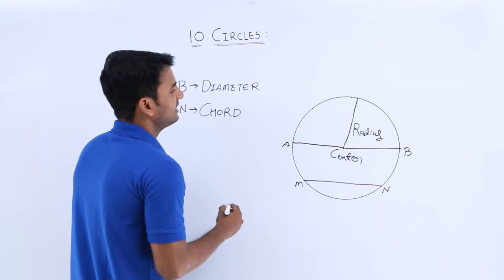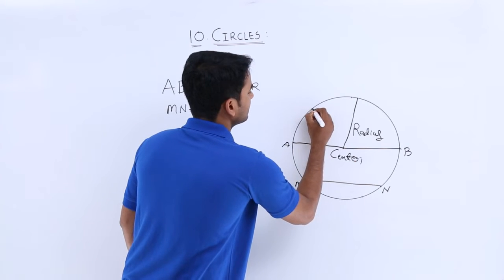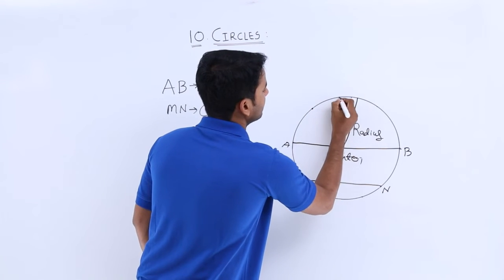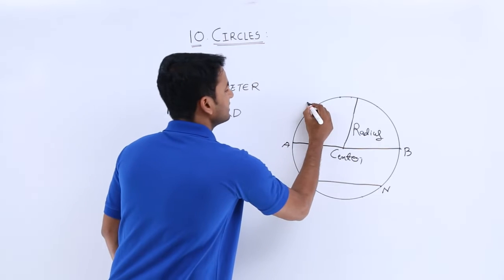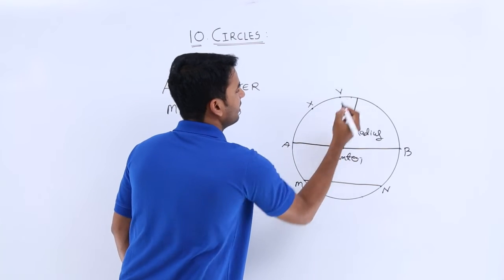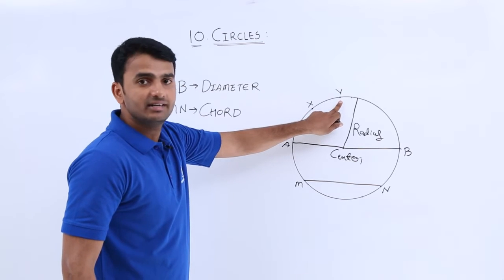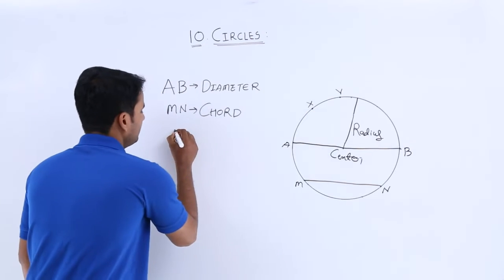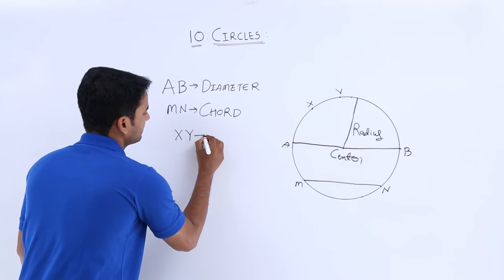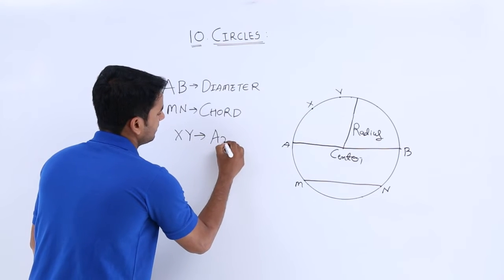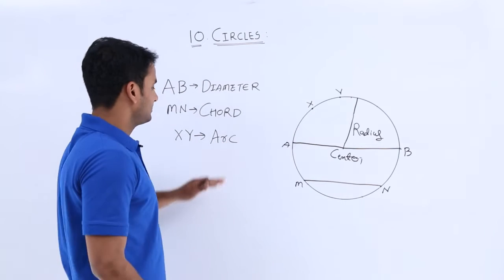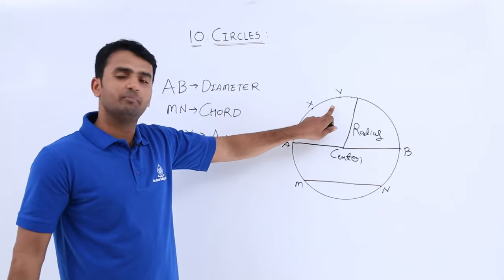And if I take two more points here and here, let's consider them as X and Y. This small portion of the perimeter is called arc. Here, X Y is an arc. This arc is nothing but a small portion of perimeter.